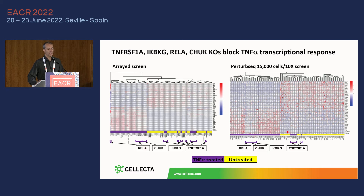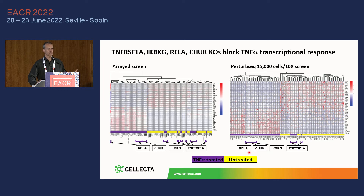We see exactly the same results with PerturbSeq. This is good — it means PerturbSeq is working and giving the same results that an array screen would give, and it makes biological sense because these are well-known genes required for the TNF-alpha transcriptional response.